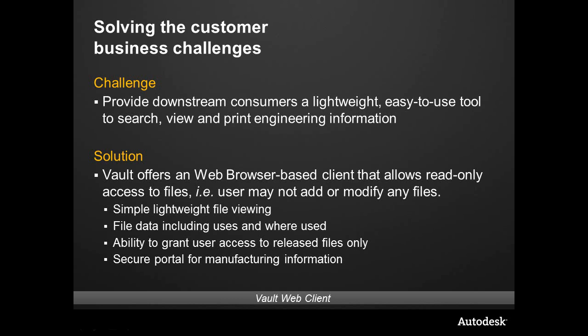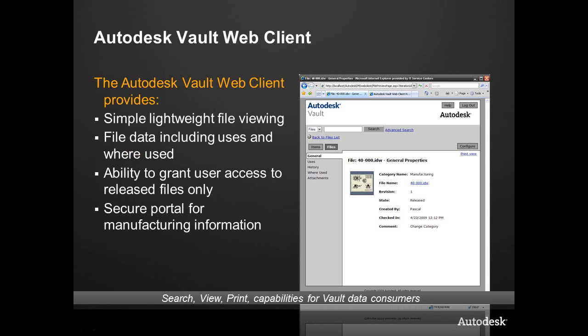The web client is nice because it shows data that is up-to-date. You're really looking at data inside of the Vault, and your login credentials that you would have inside of Vault — whether in the thick client or the full client — will be the same as inside of the Vault web client. It provides lightweight viewing, the ability to navigate through folders, see the item master, pull off a parts list if you need, and pull off a print.